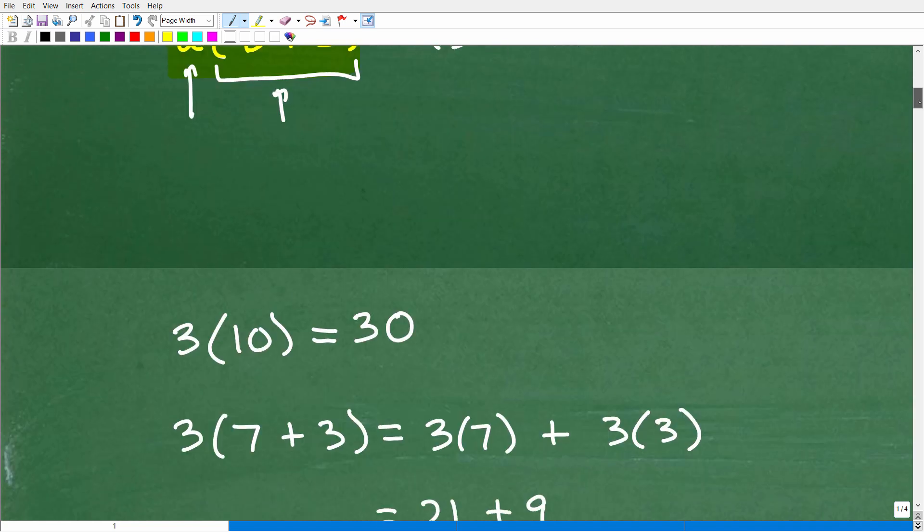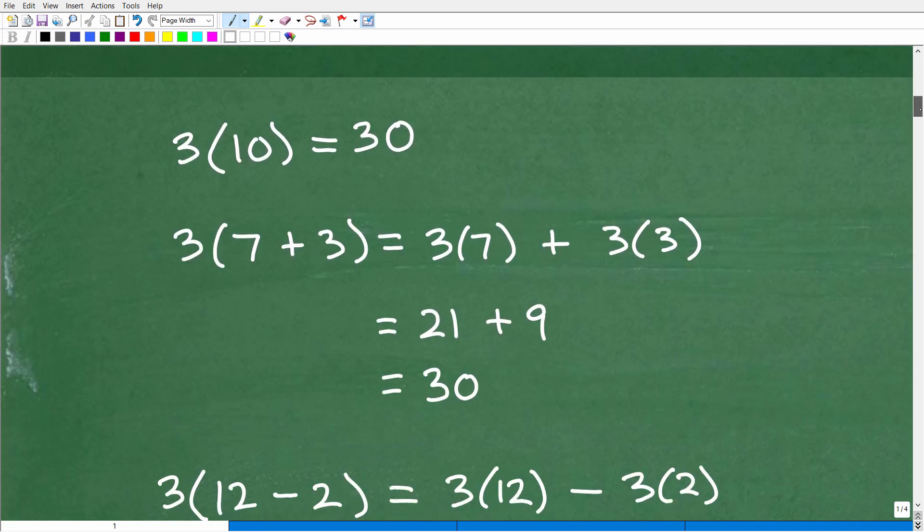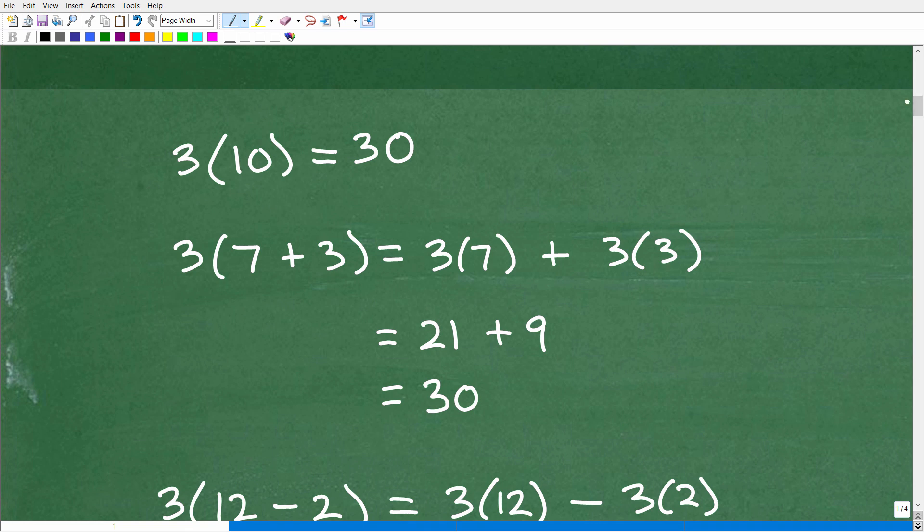And let's see how the distributive property works. We're actually going to look at the distributive property in action with just numbers. And then we'll bring in some algebra here in a second. So let's take a look at this problem here. And this is 3 times 10. Now, we all know 3 times 10 is 30. No mystery there. But let's use the distributive property to get the same answer, 3 times 10. We're going to do it in a different way. So let's think of 10. But we're going to rewrite 10 as a sum.